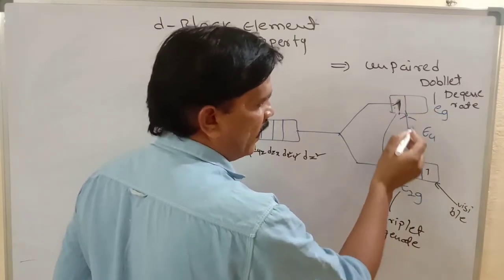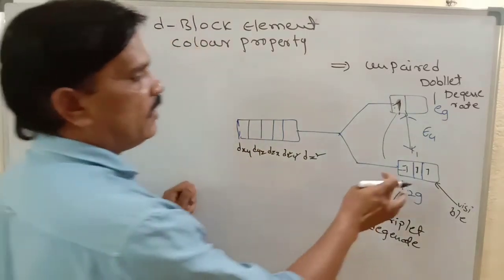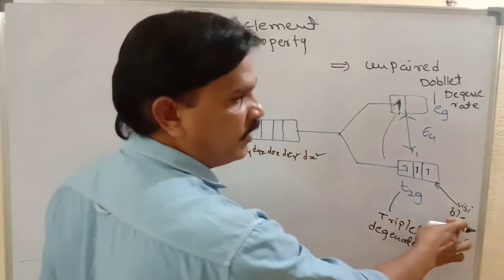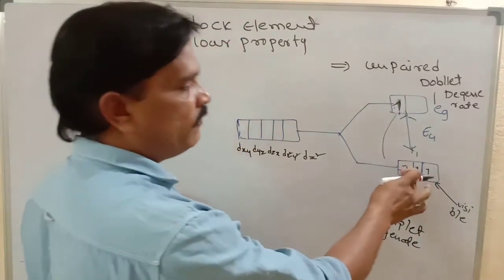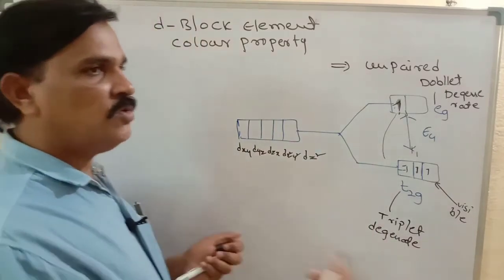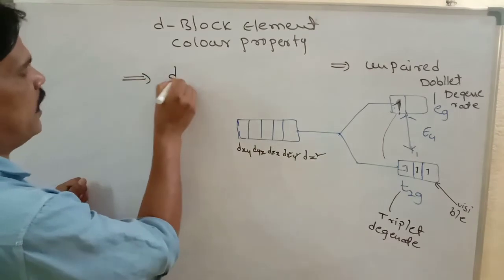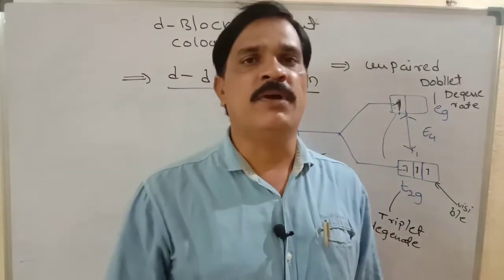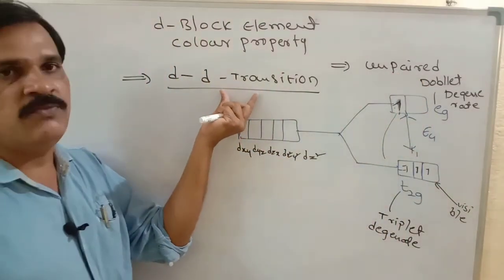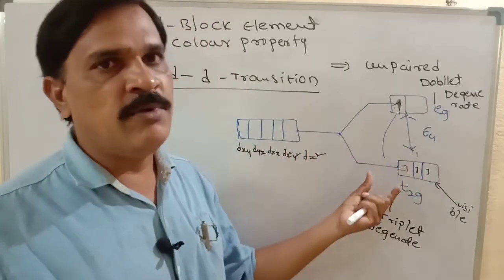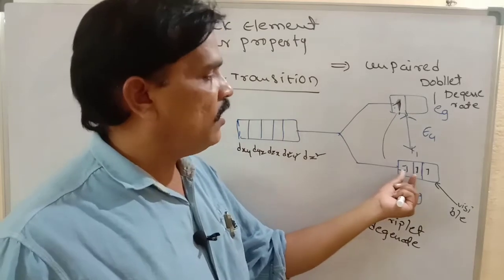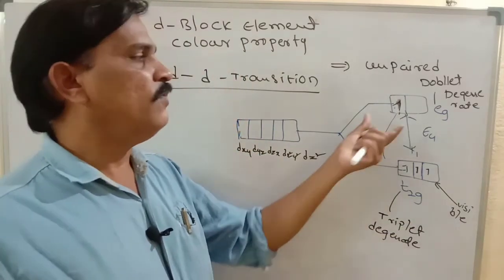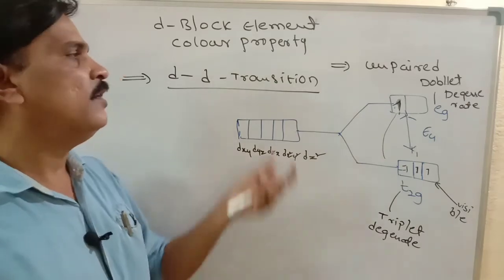After jumping to EG, the electrons lose energy and return to the T2G orbital. This transition — T2G to EG and EG back to T2G — occurs in the D orbital by absorbing visible light. During this process, the metal ion emits its complementary color. This transition is known as D-D transition, and it is the reason why D-block elements show color property.